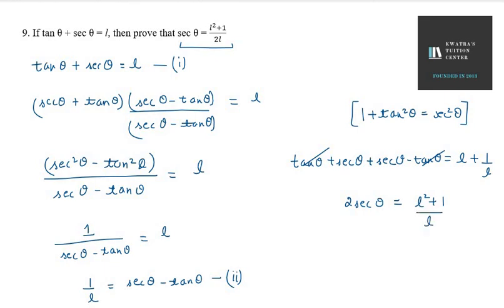So sec theta equals (L squared plus 1) over 2L, which is the right answer. You can match this with what is given in the question itself.